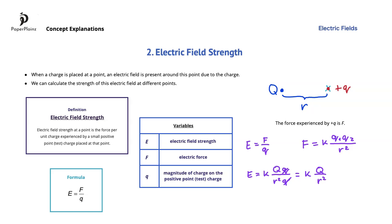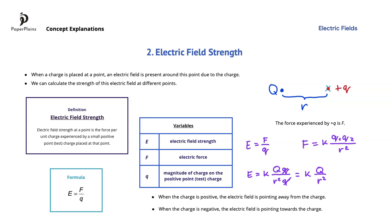Finally, since force is a vector, electric field strength is also a vector. The direction of the electric field depends on the sign of the charge — so in this example, on the sign of uppercase Q. When the charge is positive, it repels the small positive test charge, so the direction of the electric field strength is pointing away from the charge. When the charge is negative, it attracts the positive test charge, which means the electric field is pointing towards the charge. Note that the direction of electric field strength is the same as the direction of the arrows on the electric field lines.